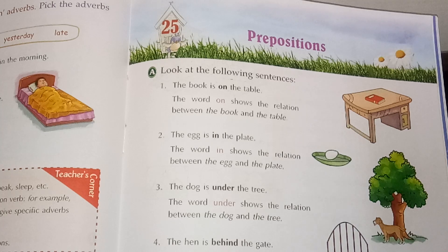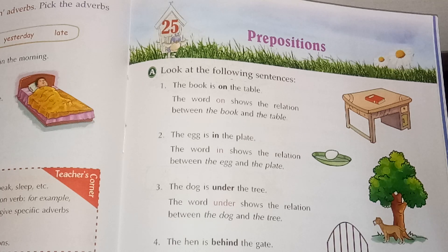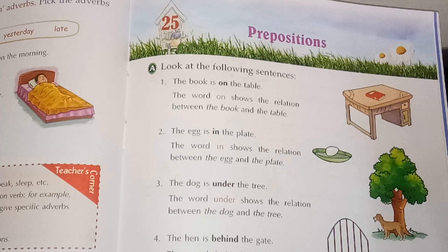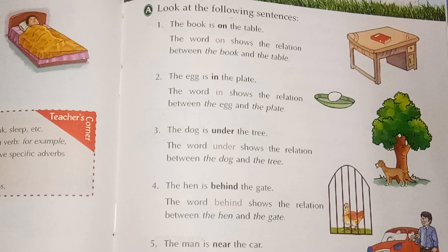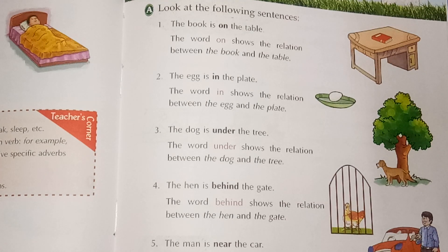The egg is in the plate. Two things: egg and plate. Where is the egg? The egg is in the plate — in means andar, uske andar hai. The dog is under the tree. Dog kahan hai? Tree ke neechi. Neechi means under.